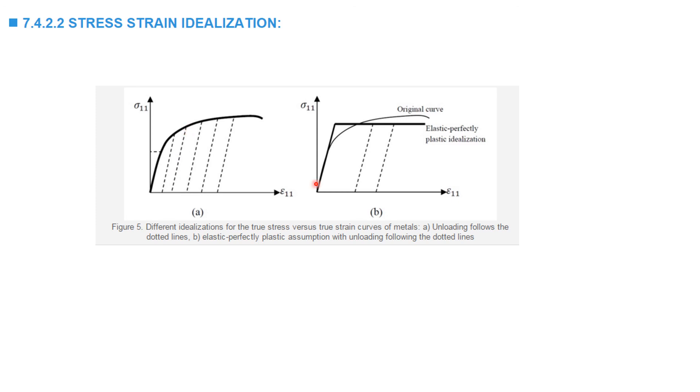For models that are used in hand or beam calculations, the curves are often idealized as elastic, perfectly plastic. This assumption simplifies the calculations. In this idealization, the behavior is assumed to be elastic up to a yield stress beyond which the stress is constant. Unloading follows the same initial elastic behavior.